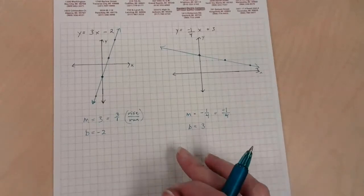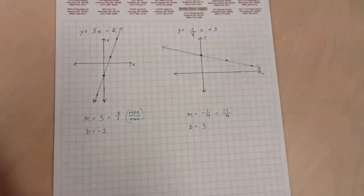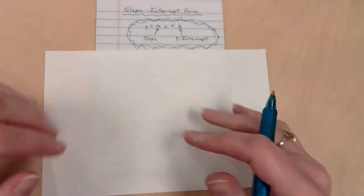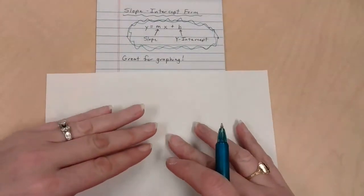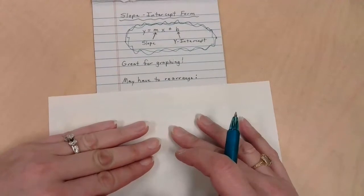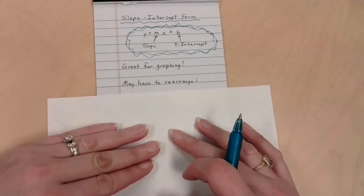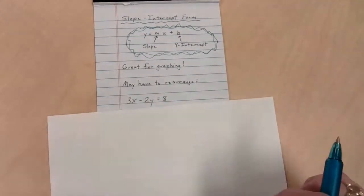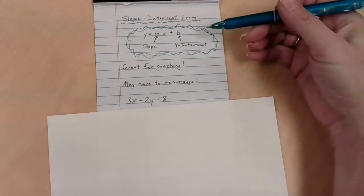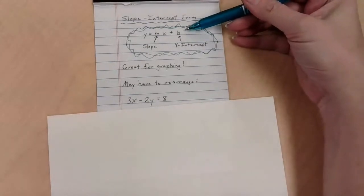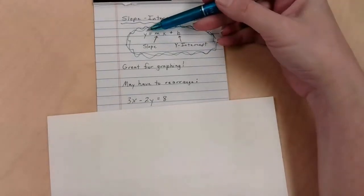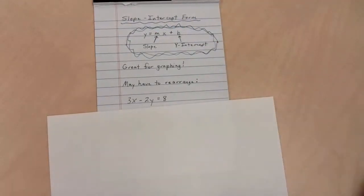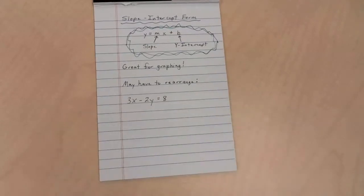Now, this works really well if we are already in slope-intercept form. But, ladies and gentlemen, what if we are not in slope-intercept form? You may have to do some rearranging. So here's an equation. This is 3x minus 2y equals 8. This equation has the y by itself. Does this equation have the y by itself? Not even close. So let's make that happen.